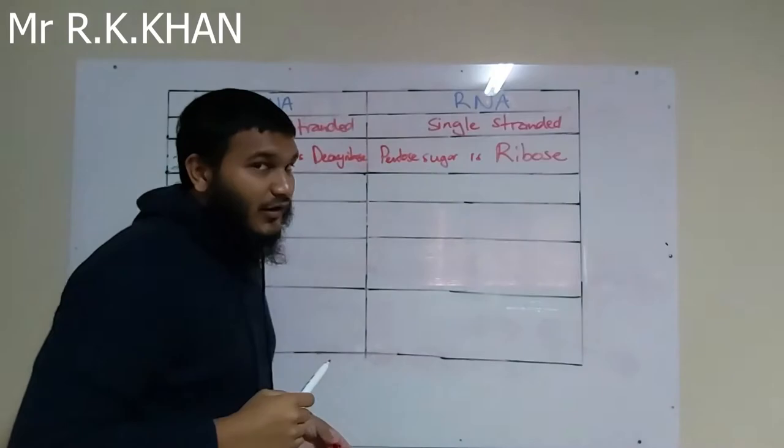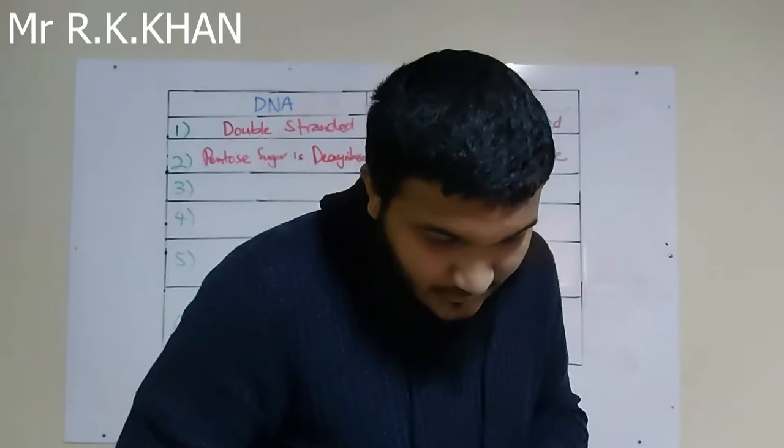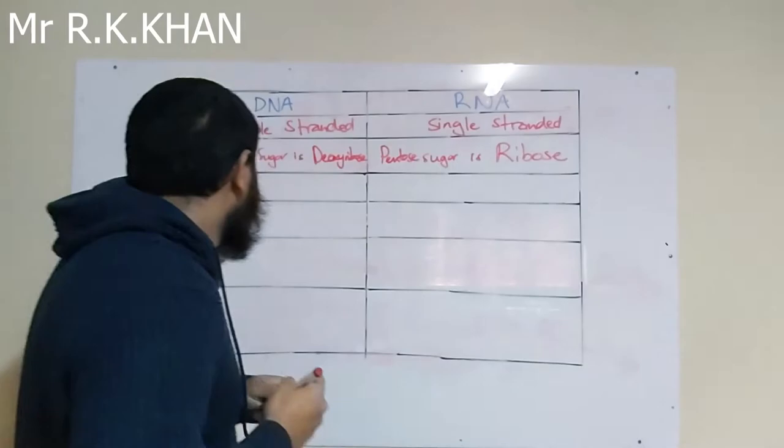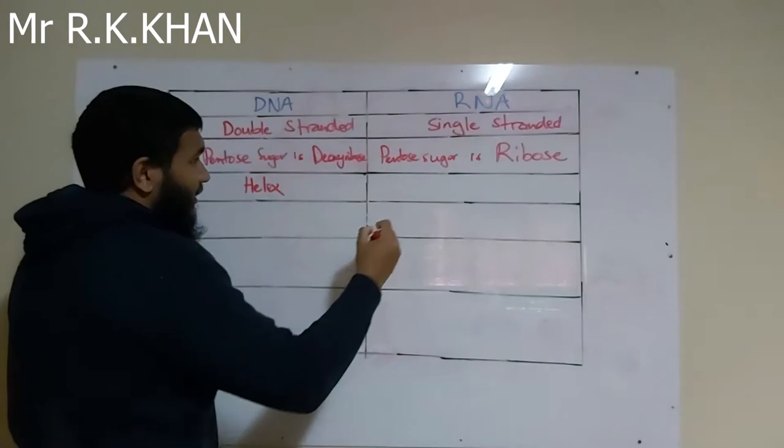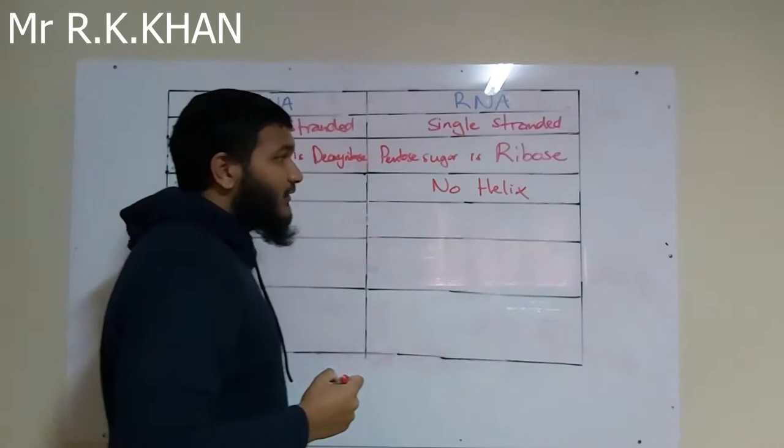The third difference is the helix structure, which links to the first difference. DNA has a helix structure, whereas RNA has no helix. So the first and third differences are connected — single stranded and no helix go together for RNA.